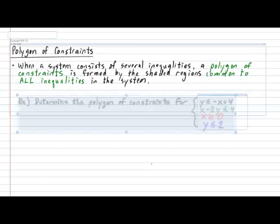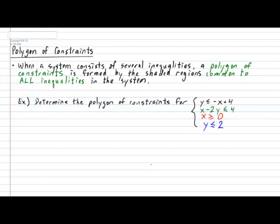Let's take a look at the shaded region of a system that involves more than just two inequalities. For your first example, determine the polygon of constraints for the following system, which contains four inequalities. In other words, when I'm asking for the polygon of constraints, I'm asking for the shaded region that is common to each of these four individual inequalities.